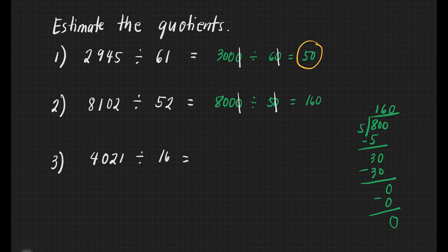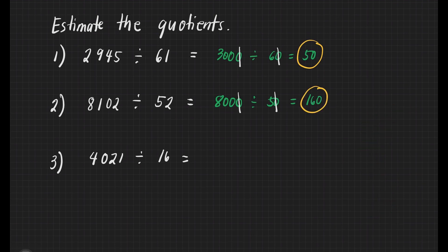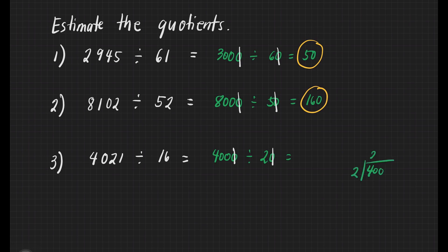That's our final answer. Let's have number 3: 4,021 will become 4,000, divided by 16 which will become 20. We're ready to cancel some zeros: one zero from our dividend and one zero from our divisor. We have 400 divided by 2. How many 2s are there in 4? That's 2. 2 times 2 is 4. Subtract: 4 minus 4 is 0. Bring down 0 — how many 2s in 0? That's 0. Bring down 0 — how many 2s in 0? That's 0. Our final answer is 200.